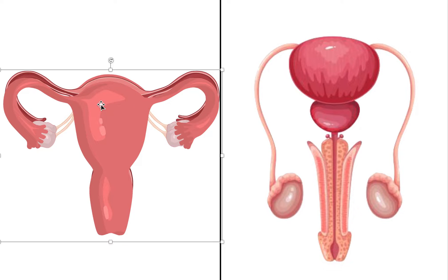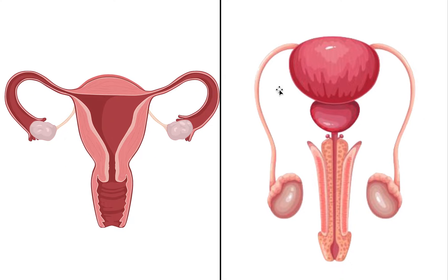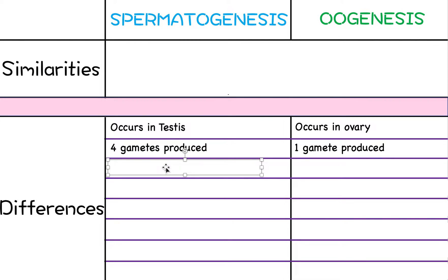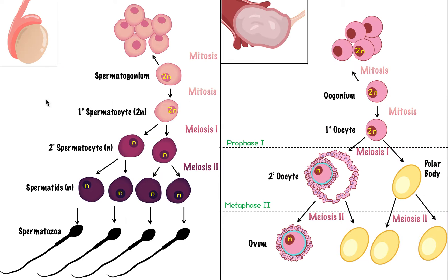Looking at the reproductive systems: in a male, sperm is made in the testes, travels through the duct, and is eventually released through the penis — this is called ejaculation. Whereas in a female, the egg is not released out of the body; rather it is released into the fallopian tube. So the release mechanisms are different: sperm is released by ejaculation, whereas the egg is released by ovulation.